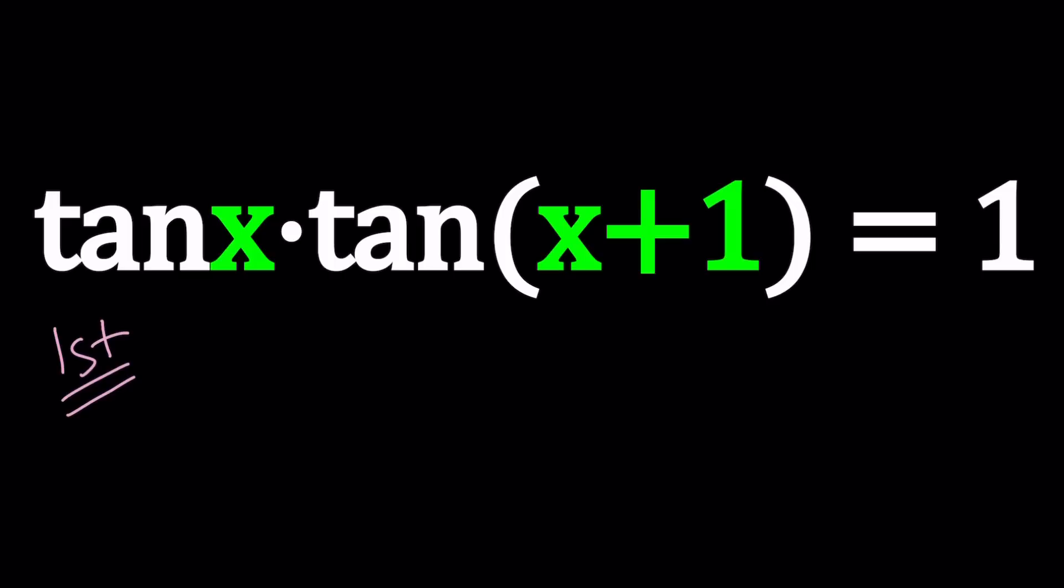Now, for my first method, I'm going to go ahead and turn tangent into sine over cosine. Because as you should know, if you've done a little bit of trigonometry, we can write tangent as sine over cosine. Pretty much every function can be written in trigonometry as a function of sine or cosine or both. And sine and cosine are related by the Pythagorean identity, which is very important.